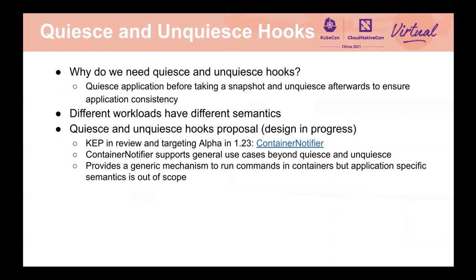The next one is quiesce and unquiesce hooks. We need these hooks to quiesce the application before taking a snapshot and unquiesce afterwards to ensure application consistency. We investigated how quiesce and unquiesce works in different types of workloads — they have different semantics. We want to design a generic mechanism to run commands in containers, while application-specific semantics are out of scope. We currently have a proposal called container notifier. The KEP is submitted and being reviewed, targeting alpha in the 1.24 release.